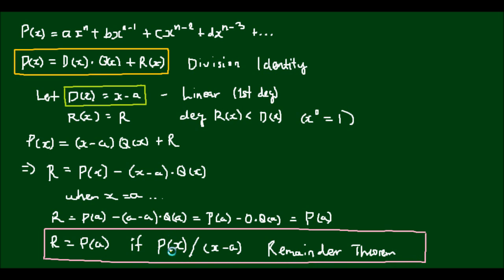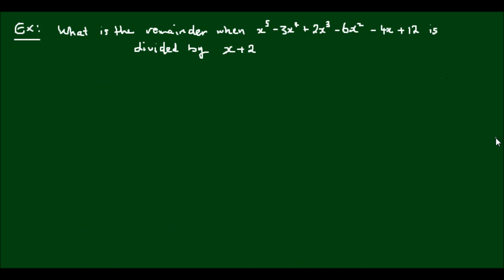So for any given polynomial p of x divided by a linear function x minus a, the remainder is always going to be the polynomial evaluated at the constant a. So let's do an example.